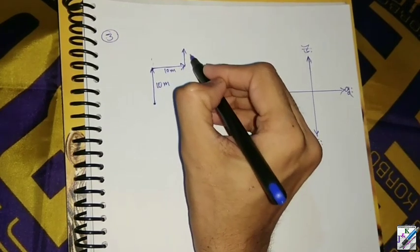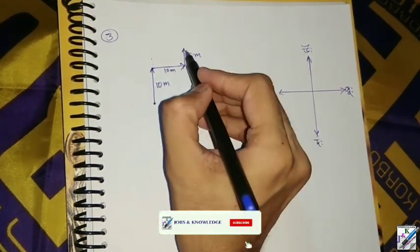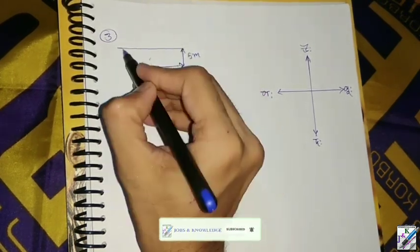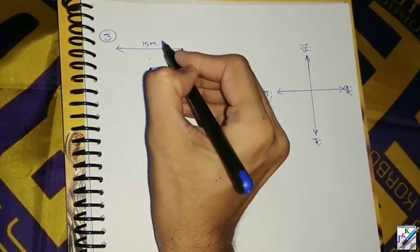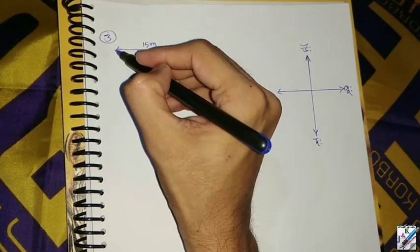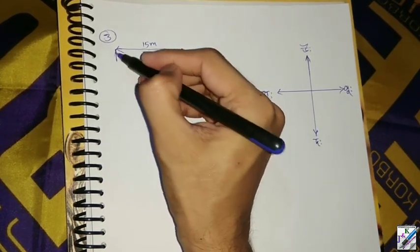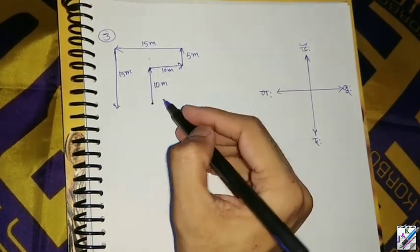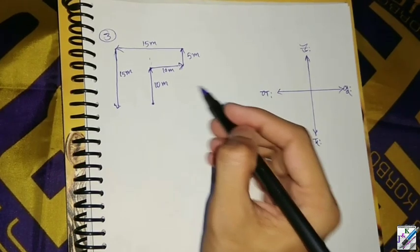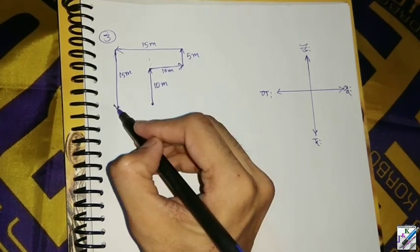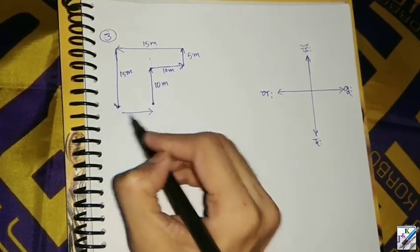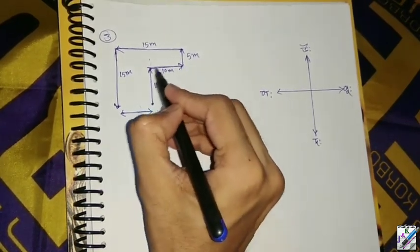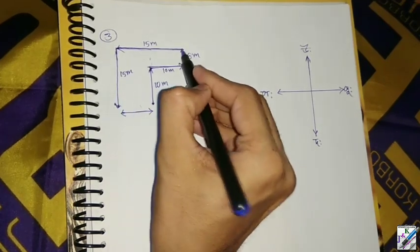The third step is 5 meters. The first step will be 15 meters and the second step will be 15 meters. The measure of the coordinate has six points. We can see the total of ten meters — roughly 10 meters.